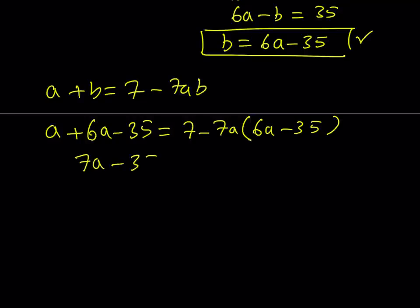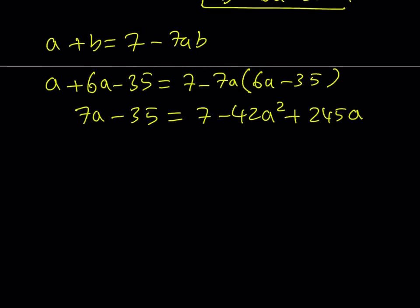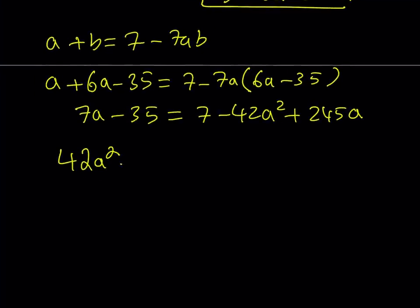7a minus 35 equals 7 minus 42a squared. So what is 7 times 35? I think it's 245. That's a positive 245a. Let's put everything on the same side and try to keep everything positive, like a squared positive. So on the left-hand side, 42a squared. So we have 7 minus 245, which should be negative 238. And then negative 35 minus 7 is going to make negative 42.